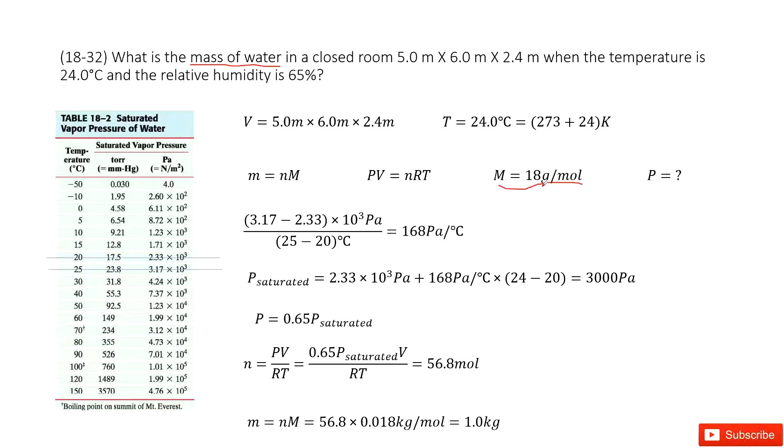And then how about to know the mole number? We know the ideal gas law, PV equals nRT. And you can see the V and T are given. R is a constant.